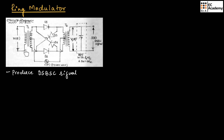It consists of two transformers, T1 and T2. These two transformers are center tapped transformers. Four diodes are connected in the form of a bridge or in the form of a ring — that's why it is known as ring modulator. It consists of a band pass filter with center frequency Fc and bandwidth 2Fm. The carrier signal is applied to the center tap of transformer T1 as well as T2. The modulating signal or message signal is applied to transformer T1, and the output will appear across the secondary of the transformer after passing through the band pass filter.